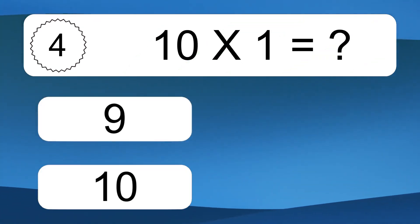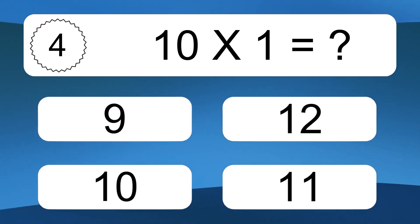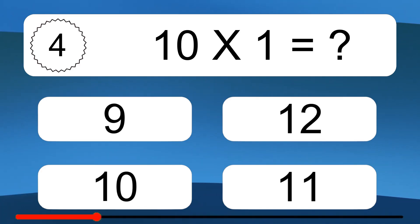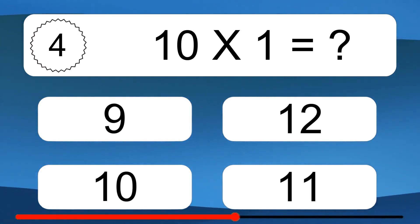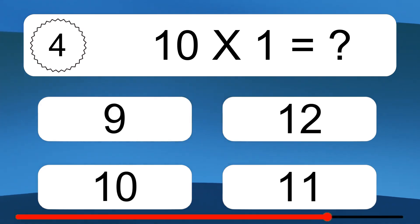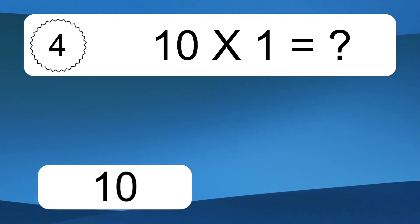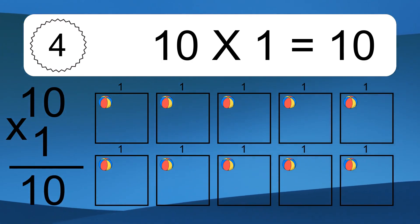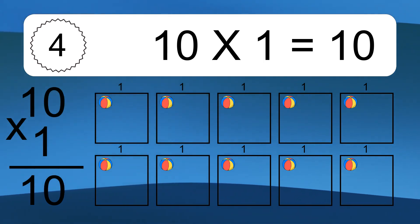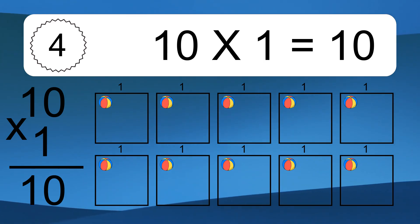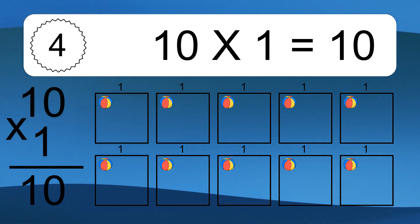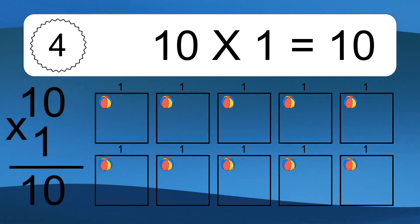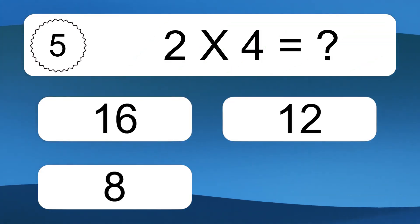10 times 1 equals 10. We have 10 boxes, and each box has 1 colorful ball inside. If you count all the balls in all the boxes together, you will have 10 times 1 balls. This equals 10 balls.